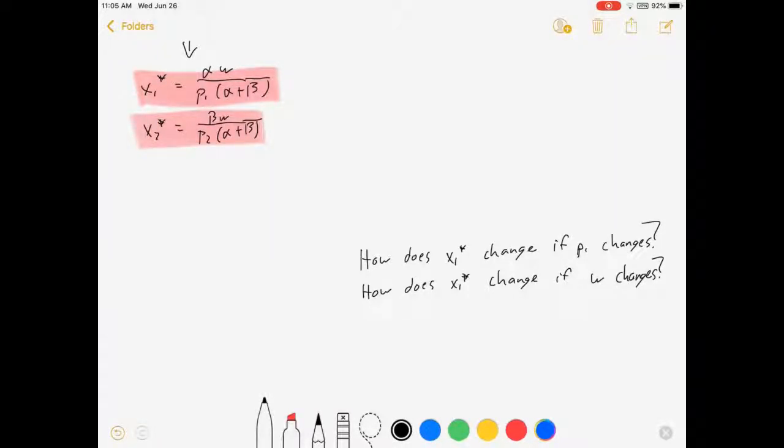To answer the question, how does x change if p changes, I'm going to say dx1 star dp1. This is saying how does x1 change if p changes. We read this as the derivative of x1 with respect to p1, or basically how does x1 change if p changes.